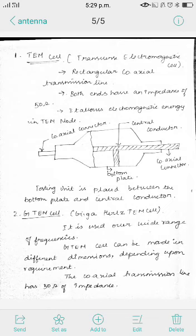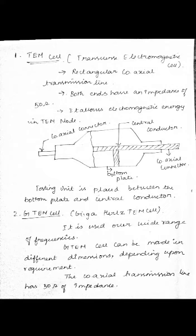The testing unit, which holds the antenna under test, is placed in the rectangular portion between the bottom plate and the coaxial line. There is a space between the coaxial line and the bottom, and inside that rectangular section you place the antenna under test.